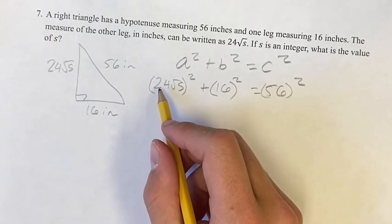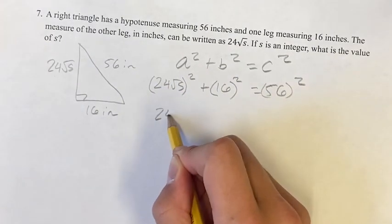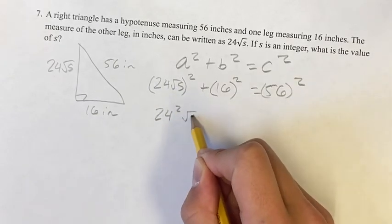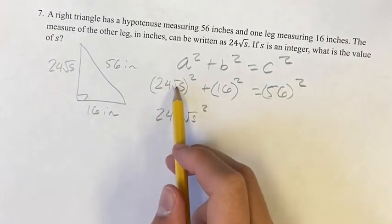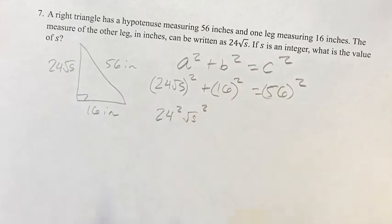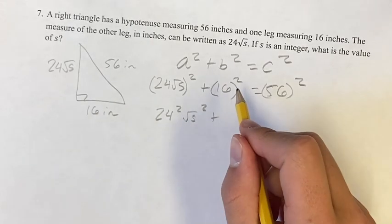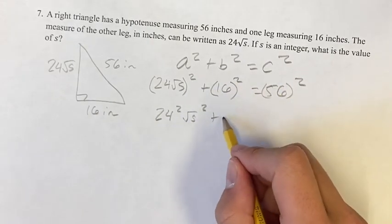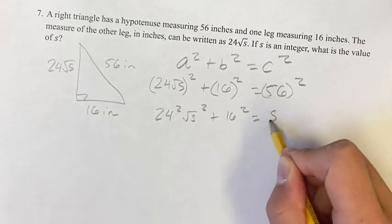We have 24 squared times root s squared, right? Because if we have this, we can split it up and square each of the individual parts plus 16 squared is equal to 56 squared.